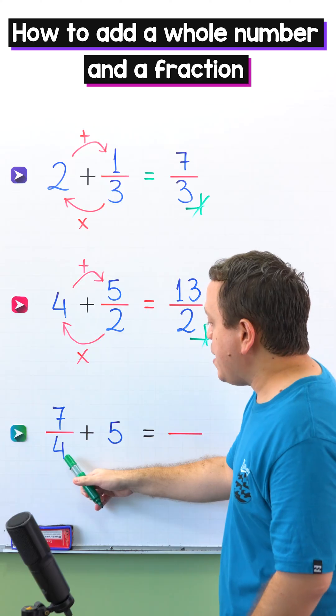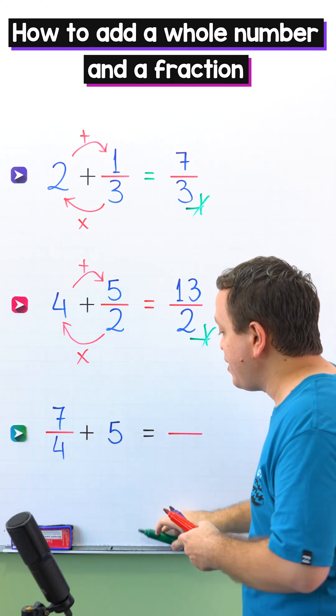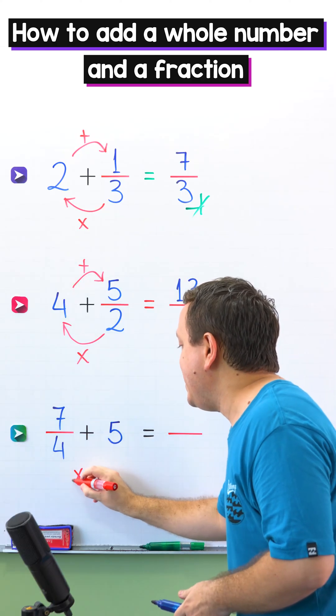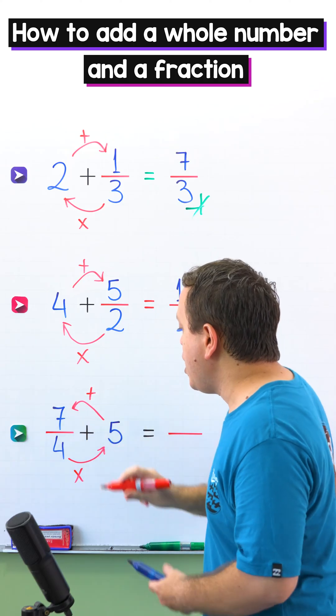In the last example, the fraction comes first. Well, in that case, we just need to follow the same steps. First, we multiply the denominator by the whole number. Then, we add this result to the numerator. Here we go!